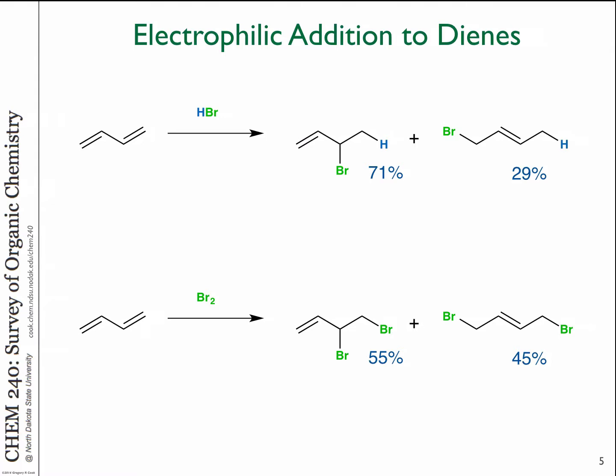If you have two double bonds in a row and react with an electrophile like HBr or Br2, this affects outcomes in different ways — it's not just reacting on one isolated double bond but the conjugated double bond system in total. When adding to a conjugated diene, there are two possible products. We see two products that are hard to explain by reacting with just a single double bond.